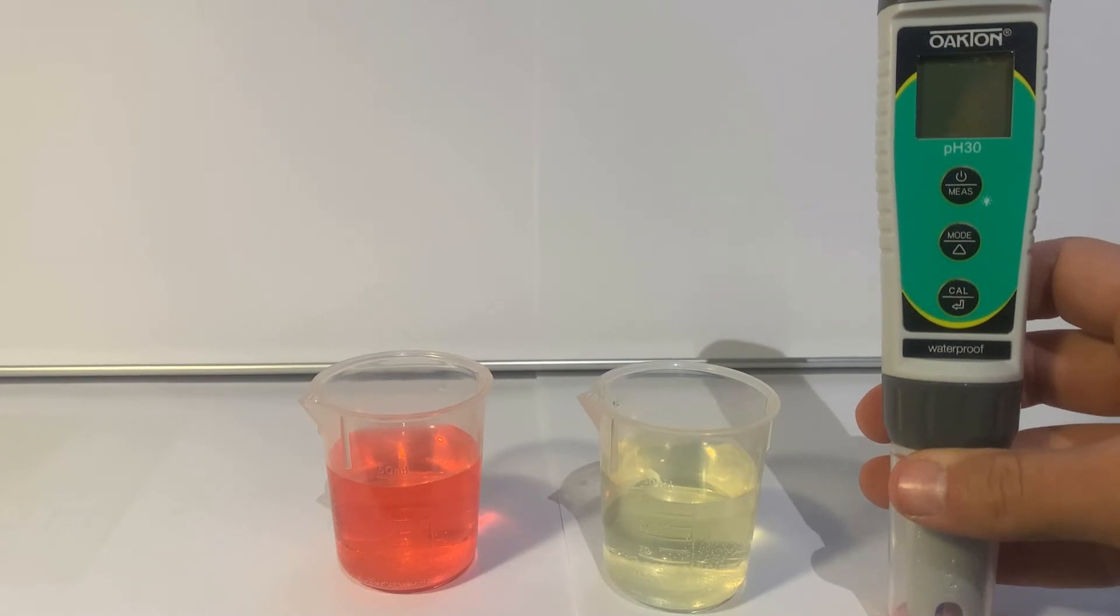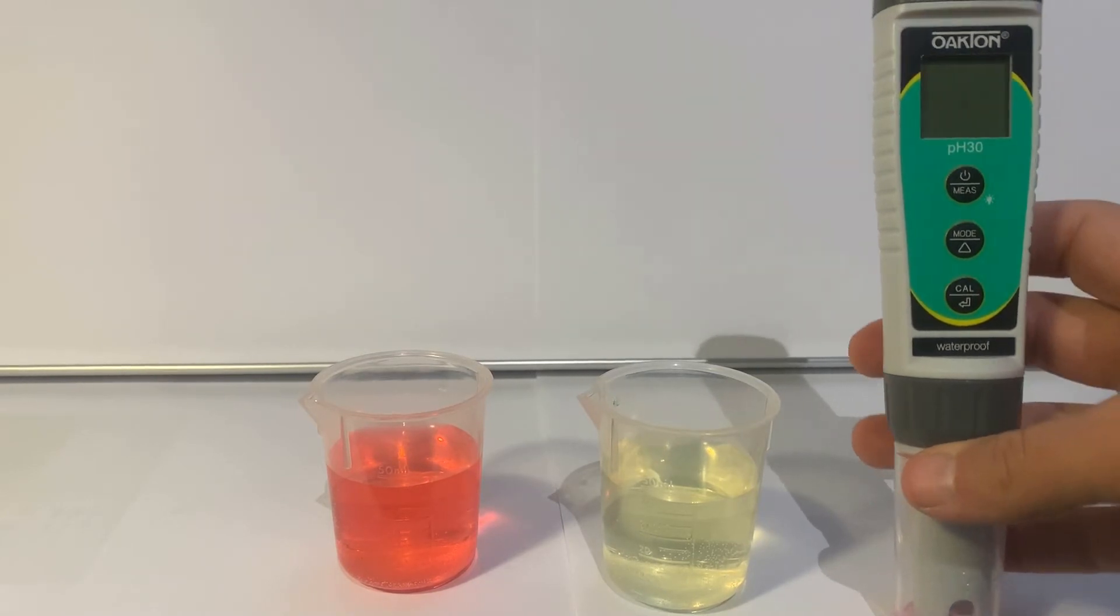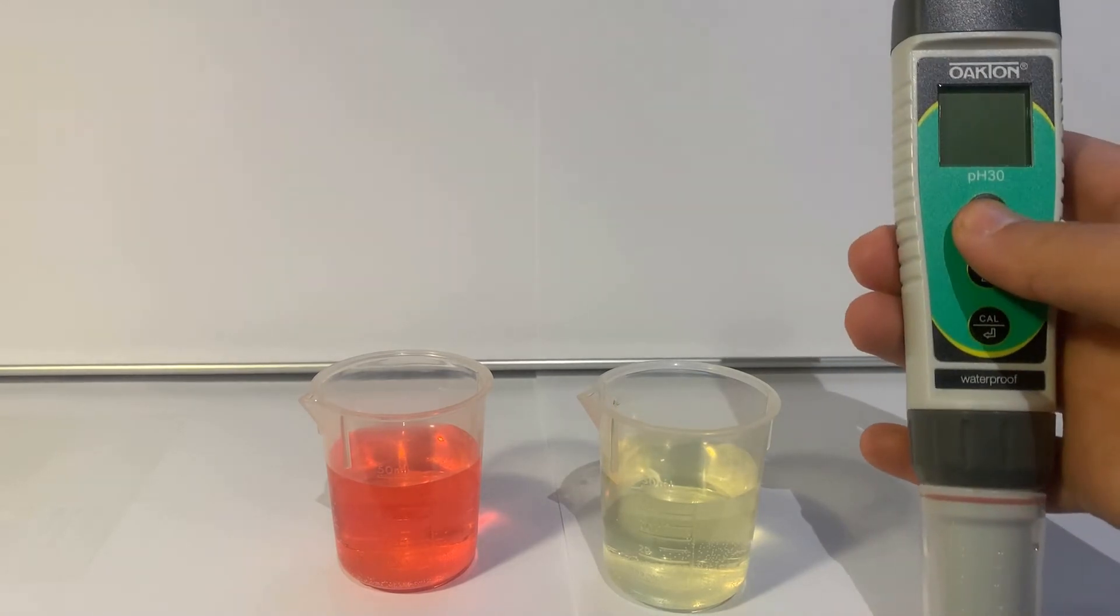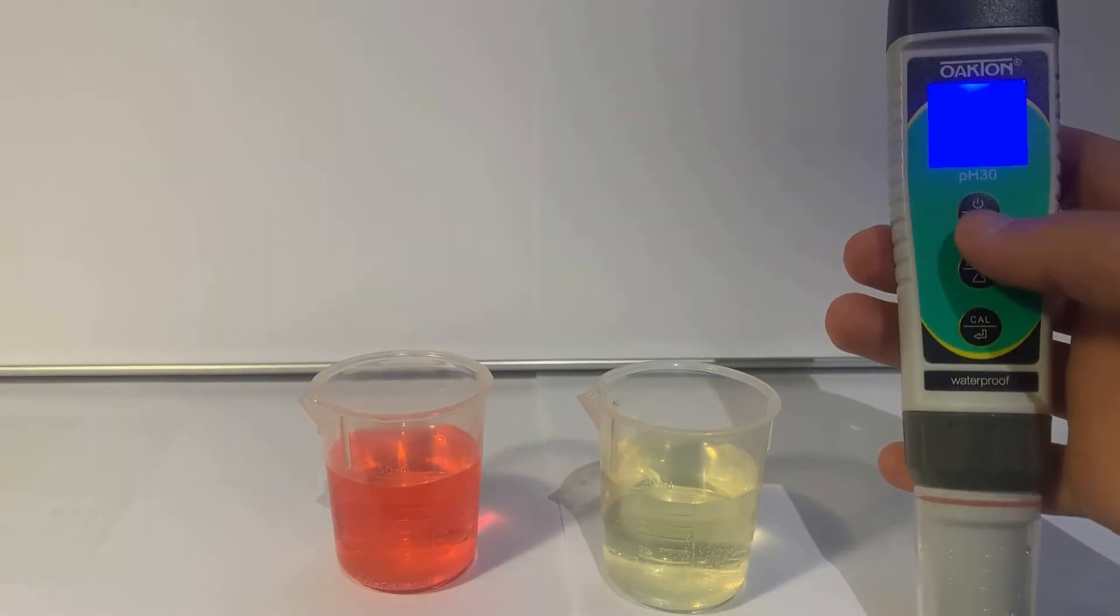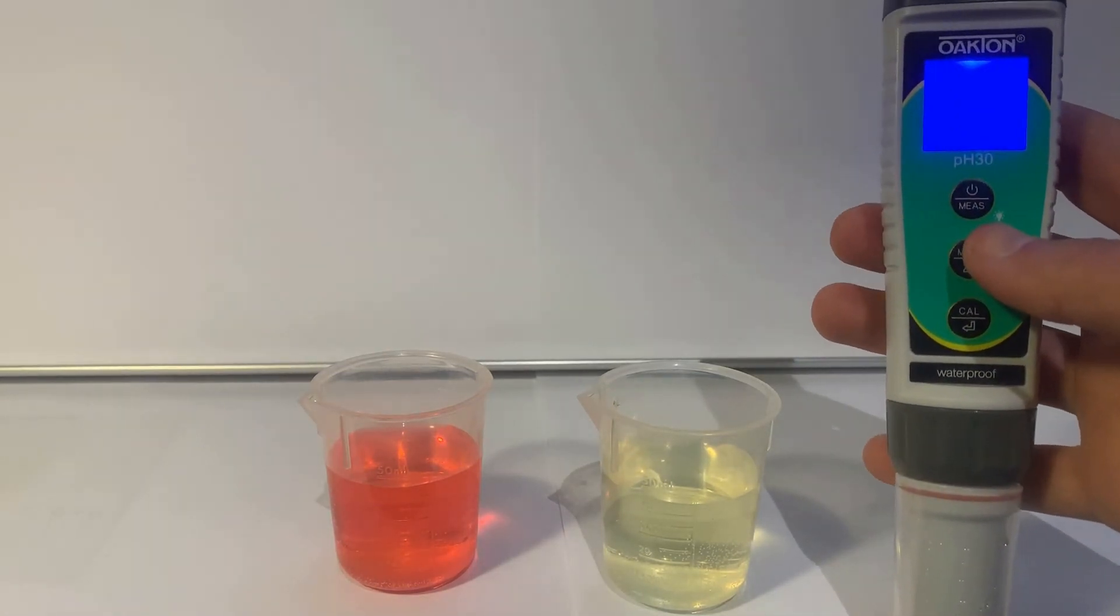Short press the power button to turn on your meter. You can short press this button again at any time to turn on the blue backlight on your screen if it helps you see.